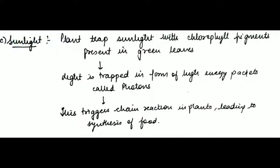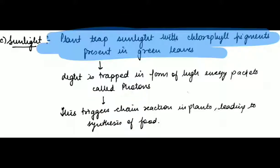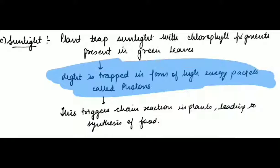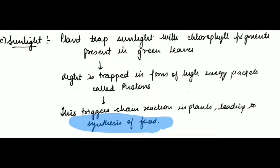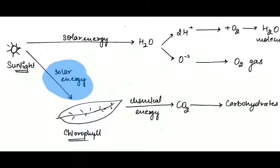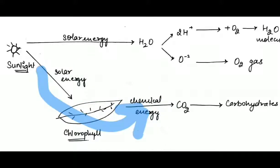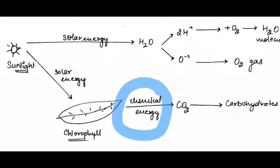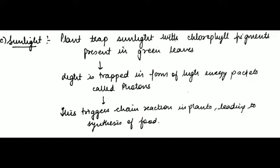Apart from that, plants trap sunlight with the chlorophyll pigment present in the leaves. This light is trapped in the form of high-energy packets called photons. Sunlight gets trapped in the form of light energy packets called photons. These photons trigger chemical reactions in plants leading to synthesis of food — that is the conversion of solar energy into chemical energy. These photons lead to the chemical reactions, and the chemical energy from photons helps this photosynthetic reaction to occur. This is how the raw materials are absorbed by the plant, leading to changes in the photosynthetic reactions.